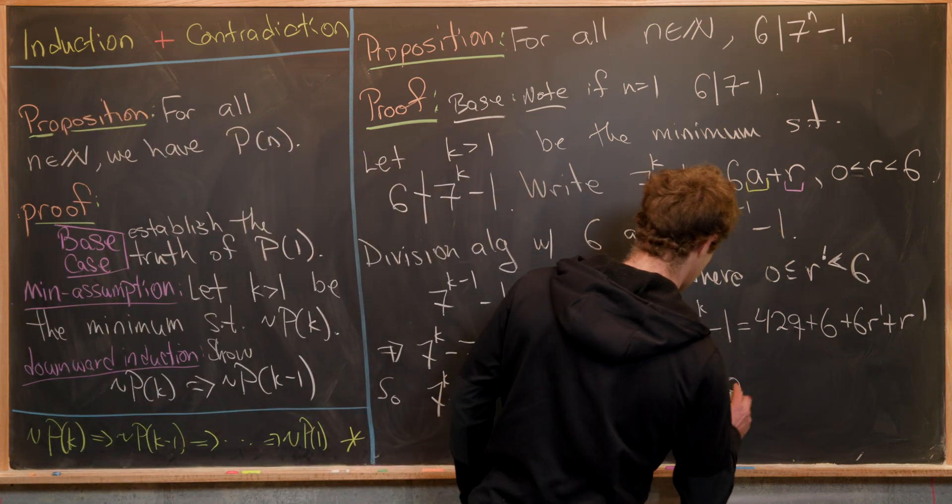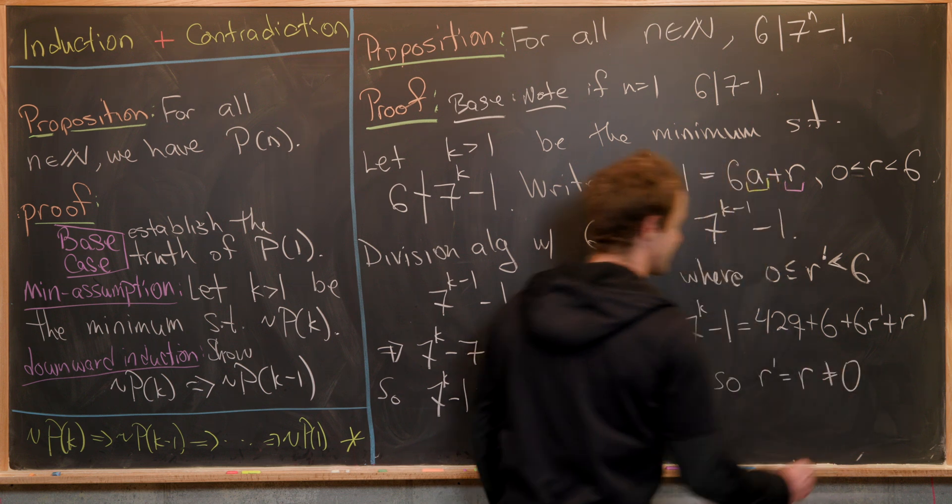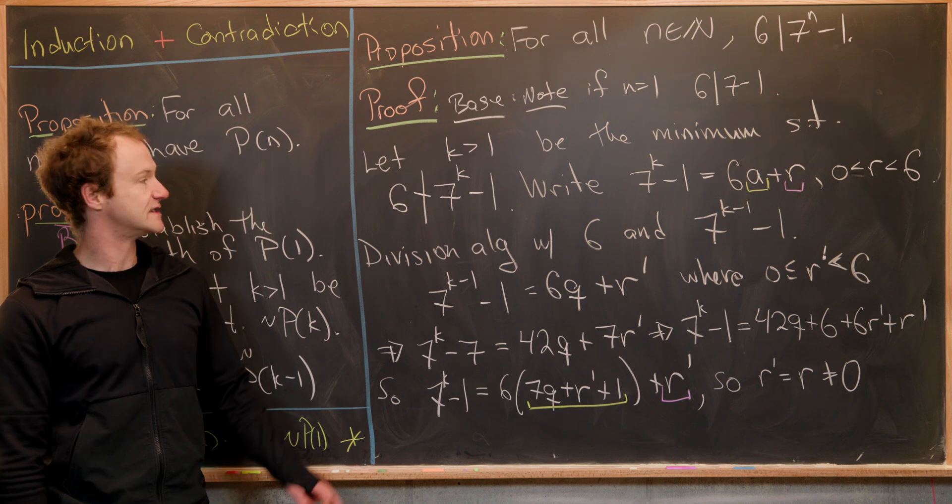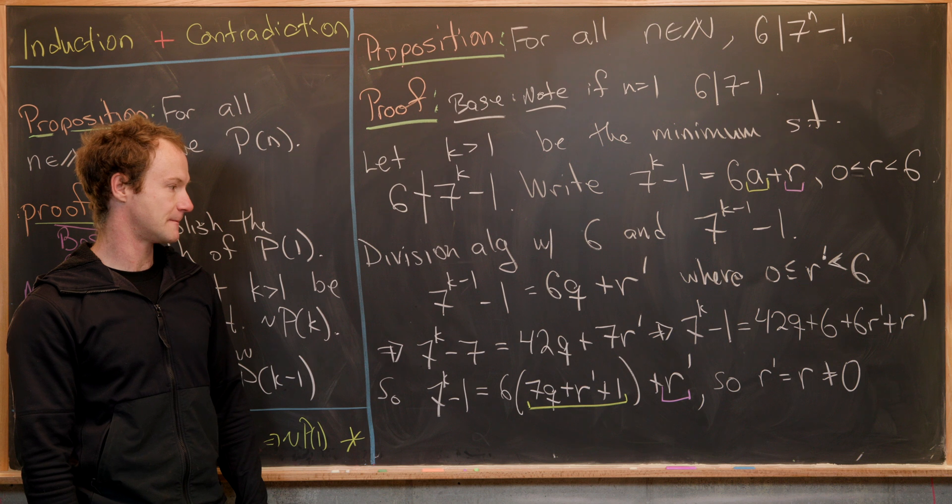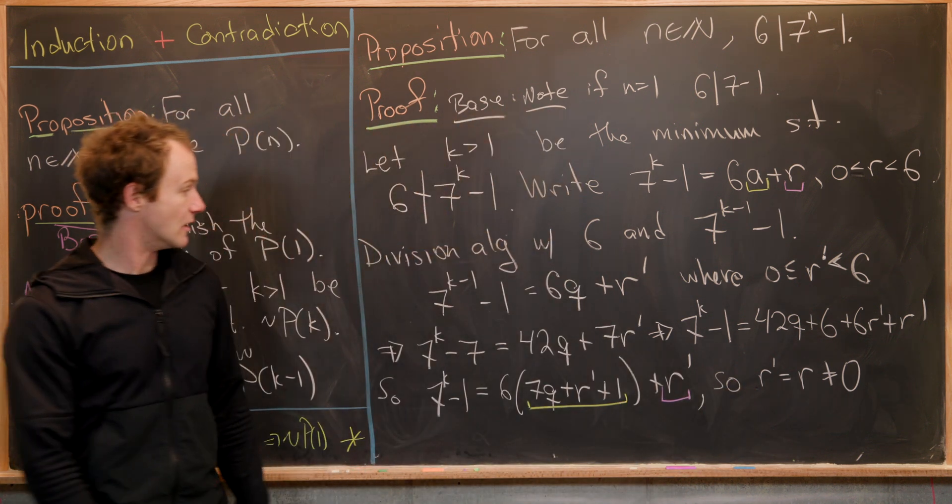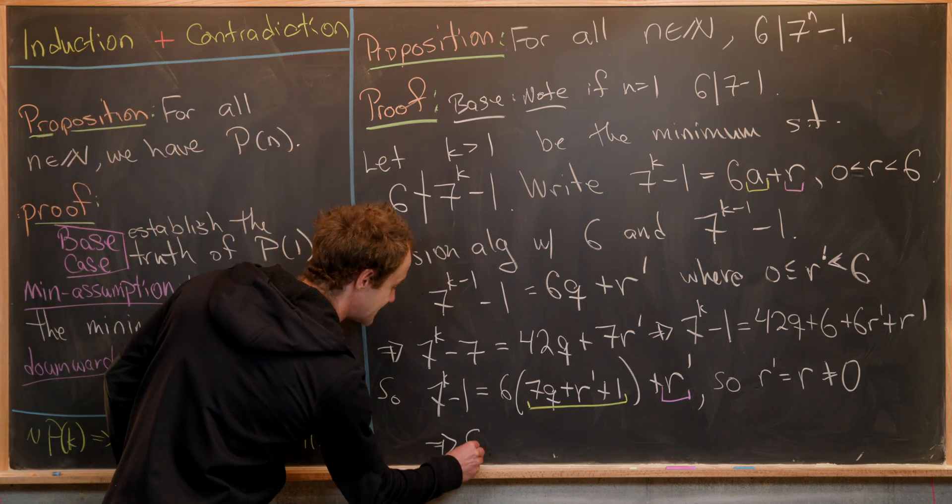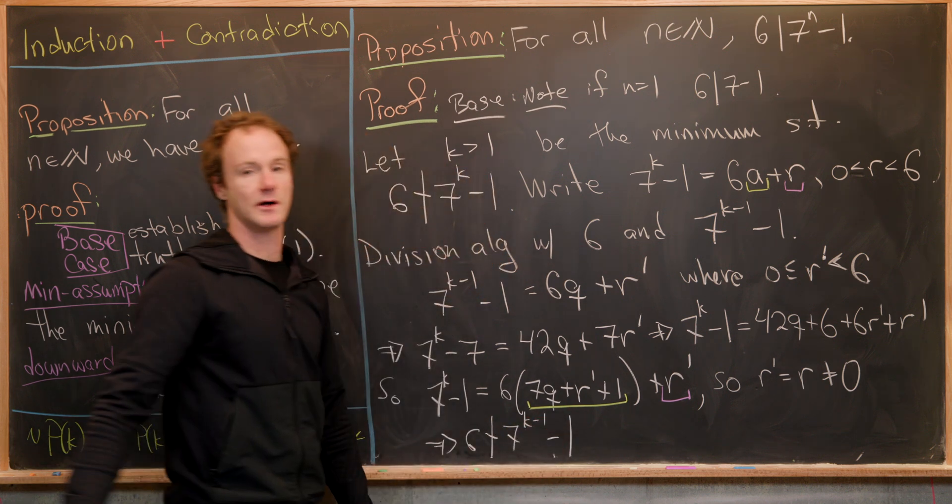To summarize, we have r prime equals r. But notice, we have our assumption that r is not equal to zero because six does not divide seven to the k minus one. So the fact that r prime is not zero tells us that six does not divide seven to the k minus one minus one.